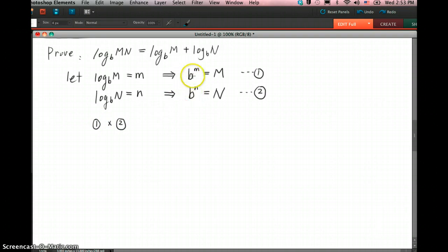If we multiply equation 1 by equation 2, then the left side multiply left side, right side multiply right side. So we would get b^m times b^n equals MN.